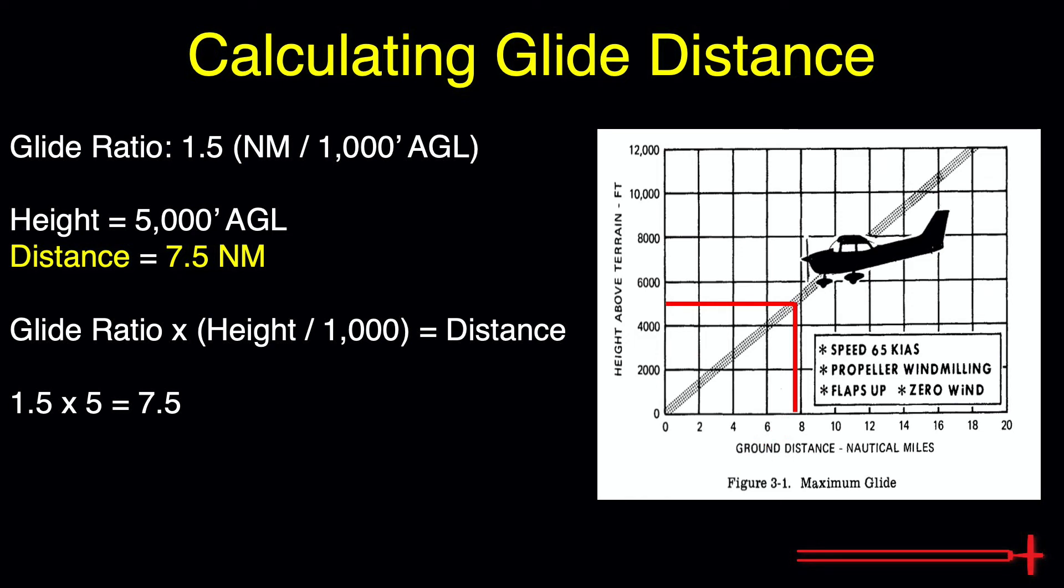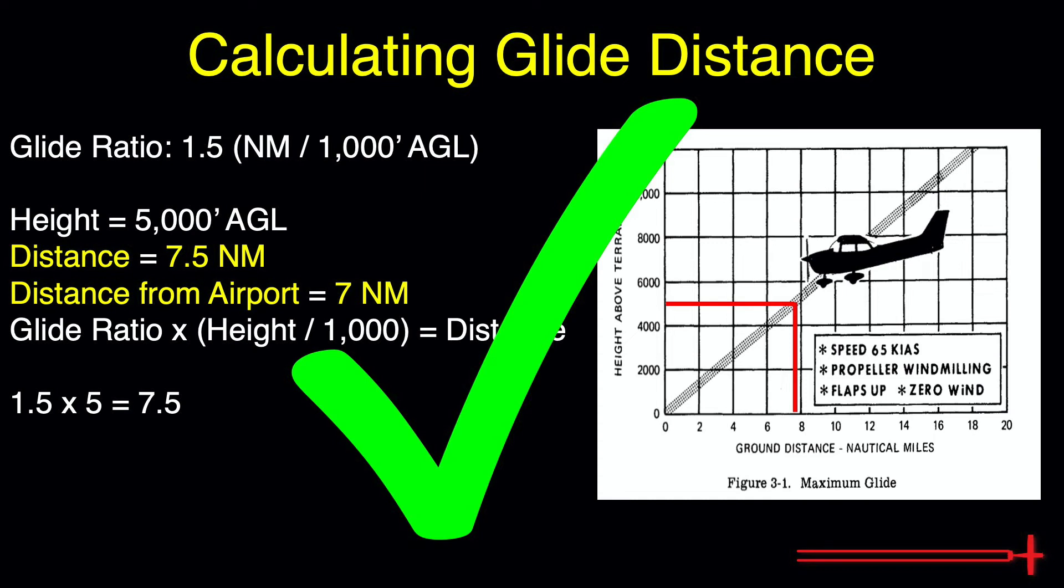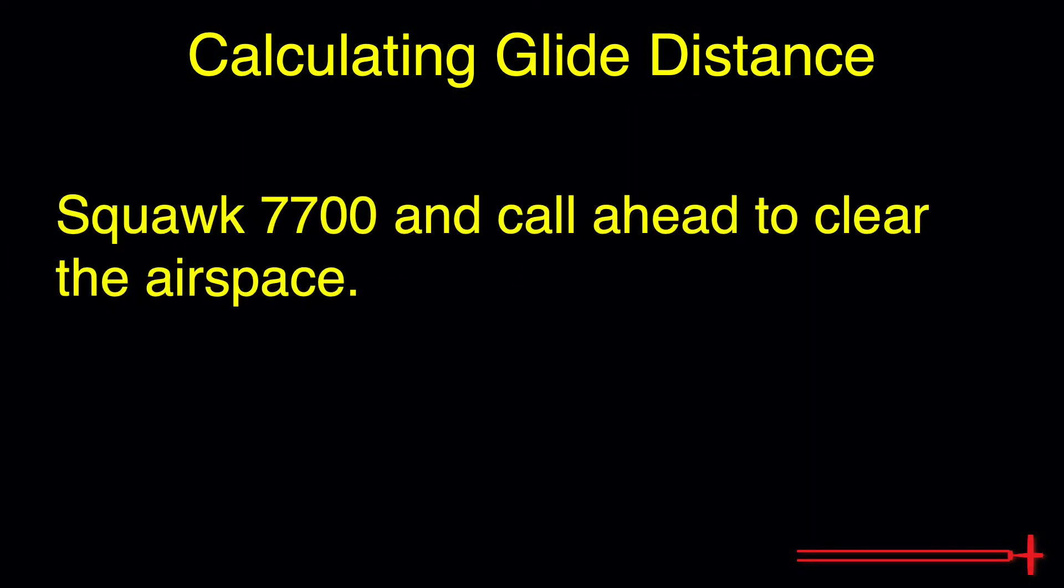In our example problem, we found ourselves 7 nautical miles from the nearest airport, which means we should be able to make it there with a small amount of altitude to spare. At this point, we should not hesitate to turn towards the airport if we haven't already, and now would be a good time to squawk 7700 and call ahead to let anybody in the area know to clear the airspace for you.